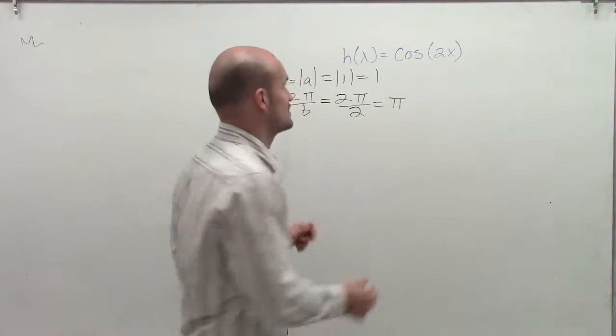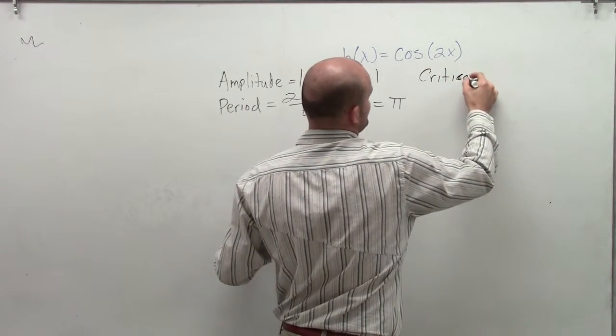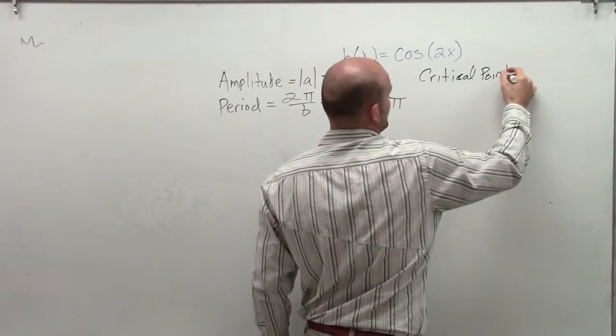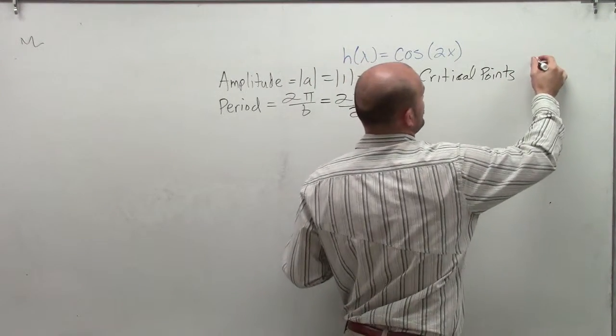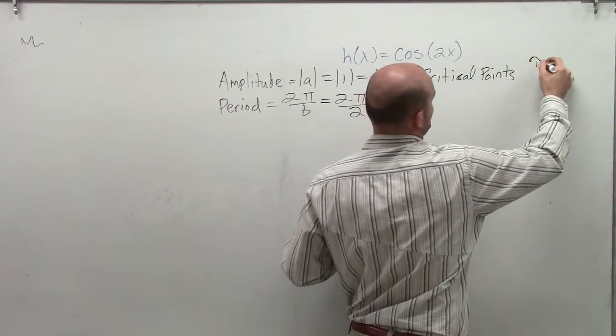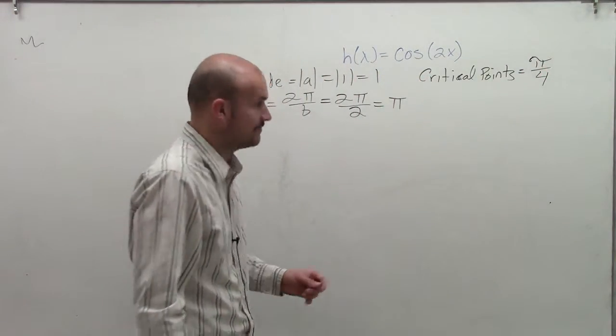To find the distance of the critical points, what I want to do is take my period and divide it by 4, because there are four critical points of our period. So I take my period, which is π, and divide it by 4, which is just π over 4.